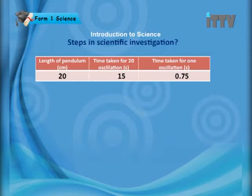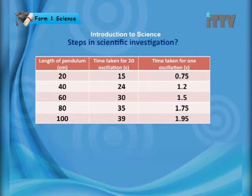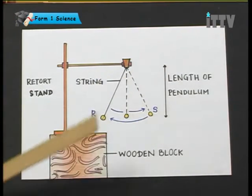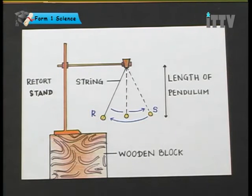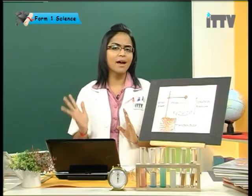What would you actually observe at the end of the experiment? Looking at the table: when the length of pendulum is 20 centimeters, the time taken is 15 seconds and the time for one oscillation is 0.75. As you can see, when the length increases, the time taken for 20 oscillations also increases, and the time taken for one oscillation also increases. So we keep changing the length of the pendulum and the period of oscillation also increases. According to the results, the longer the length of pendulum, the longer the period of oscillation — this was the hypothesis, and it is valid. The hypothesis is true.